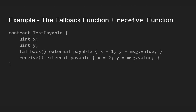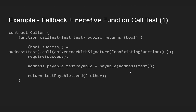Whatever is given to the function as a parameter will be assigned dynamically through the message.value parameter. So the first value assigned to x is the hard-coded one, and the second is a dynamic value given by a parameter. We have two state variables, a fallback function, and a receive function. The contract is called TestPayable because of that payable keyword. On the next slide we start constructing our testing contract, which is why that slide is called 'Fallback Plus Receive Function Call Test,' and the contract is appropriately called Caller.